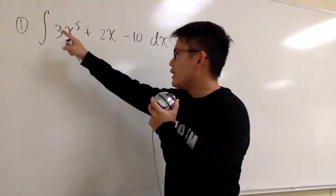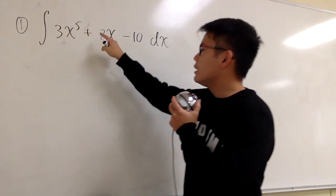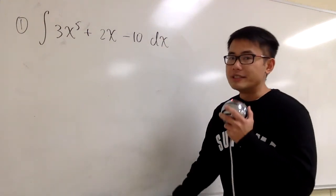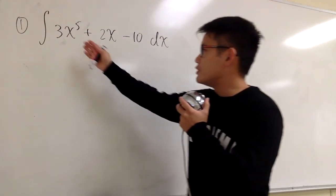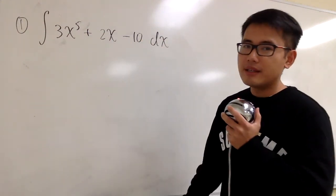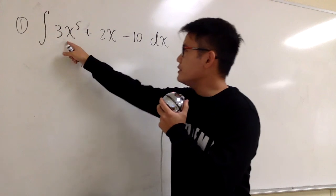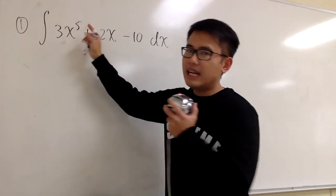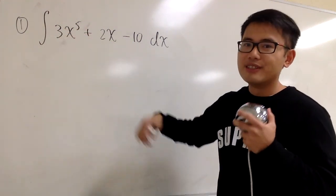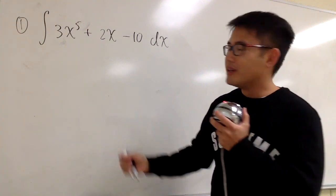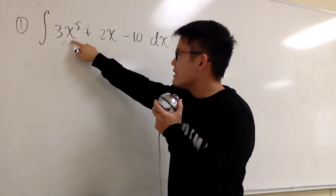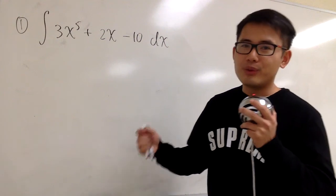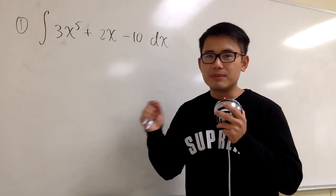For the first one, we have the integral of 3x to the 5th power plus 2x minus 10, dx. We see that we have 3 individual terms. For the first term, 3x to the 5th power, it's not affected by anything else, so we are good to go — we have x to a power already, so that means we can do the reversed power rule.